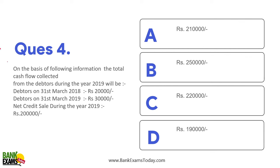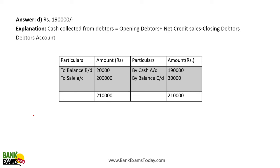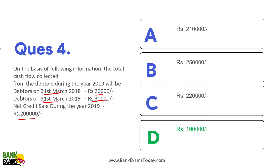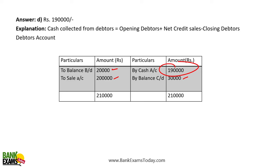On the basis of the following information, the total cash collected from debtors during the year 2019 will be: debtors as on 31st March 2018 — 20,000; debtors as on 31st March 2019 — 30,000; net sales — 2 lakh rupees. You need to calculate how much cash was collected. Make a simple ledger: opening balance 20,000, add net sales 2,00,000, closing balance 30,000 — so cash collection is 1,90,000.